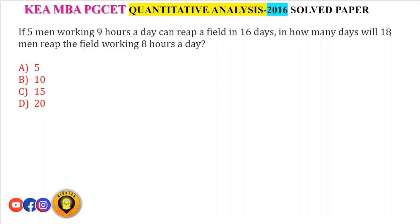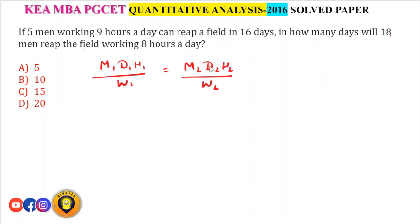If 5 men working 9 hours a day can reap a field in 16 days, in how many days will 18 men reap the field working 8 hours a day? This question is of the form M1 × D1 × H1 / W1 = M2 × D2 × H2 / W2. Given that M1 = 5, D1 = 16, H1 = 9.